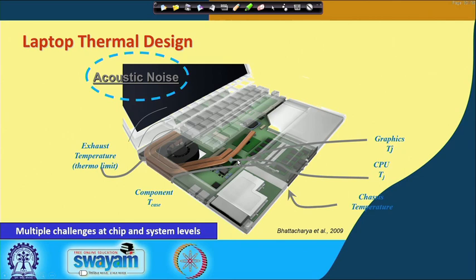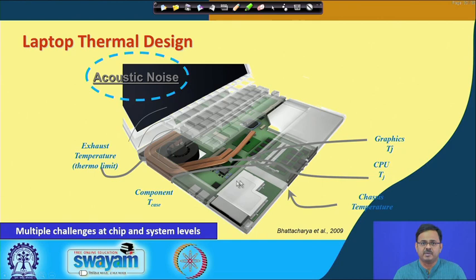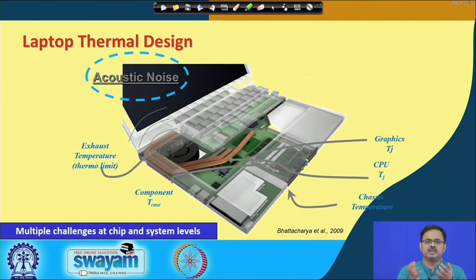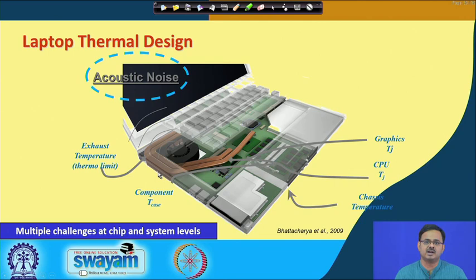For certain high heat-dissipating components such as the CPU and graphics chip, we have a dedicated cooling solution — in this case a heat pipe connected to a fan-heat-sink arrangement. Many others, such as memory, the platform controller hub, and wireless LAN, depend on the air movement inside the system. That air absorbs heat as it flows through and then dissipates it, throwing out hot air.